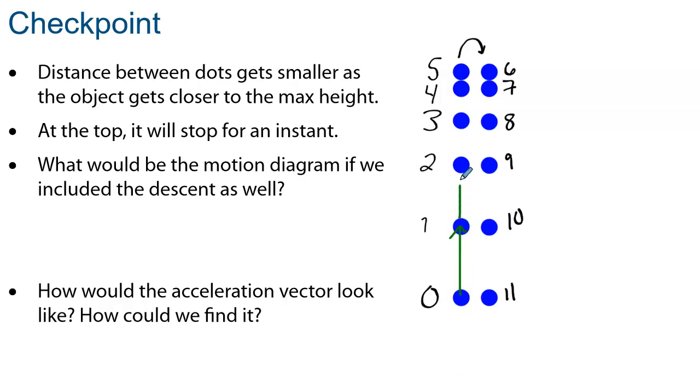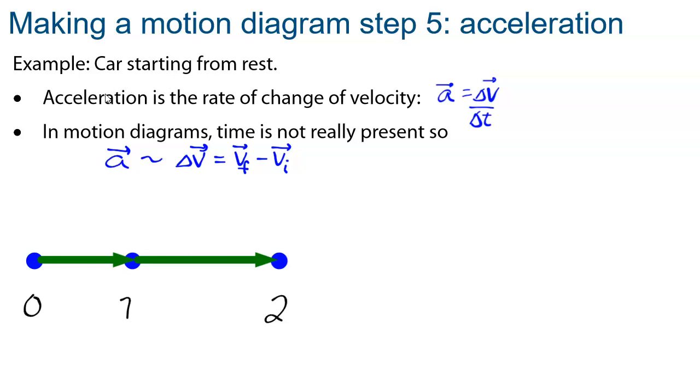And while I'm doing this, I want you to think about what would we do if we wanted also to include the acceleration vectors. How should we represent the acceleration vectors? So let's look at how we can calculate the acceleration. We know that acceleration is the rate of change of velocity. So the acceleration by definition is Δv, change in velocity, over Δt, the time interval. But in the motion diagram, the Δt is not really something we control. So the acceleration will go as the change in velocity, Δv, which is just v_final minus v_initial.